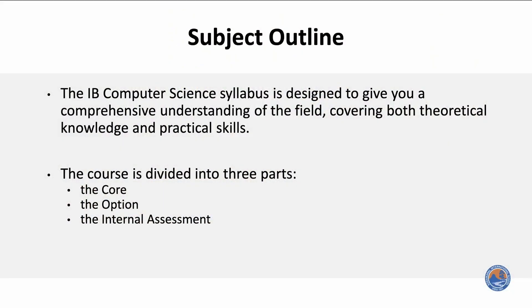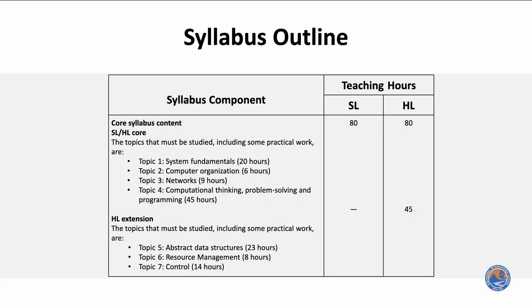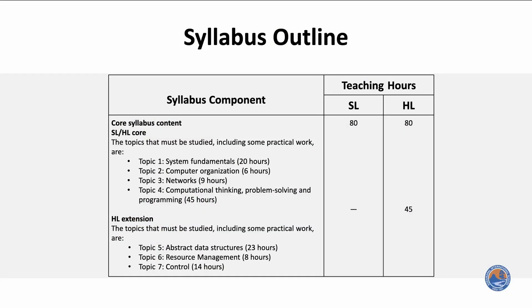Moving on to the subject outline, this course is offered at standard and higher levels. The course is divided into three parts: the core, the option, and the internal assessment. In Paper 1, the topics of the course are System Fundamentals, Computer Organization, Networks, Computational Thinking, and Problem Solving. Both SL and HL students study these four topics. Three additional topics are included for higher level students: abstract data structures, resource management, and control systems.